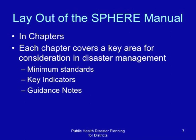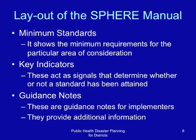Please acquire a copy of the SPHERE manual. The minimum standards section shows the minimum requirements for the particular area of consideration. The key indicators act as signals that determine whether or not a standard has been obtained. The guidance notes provide additional information useful for actual implementation of the standards.